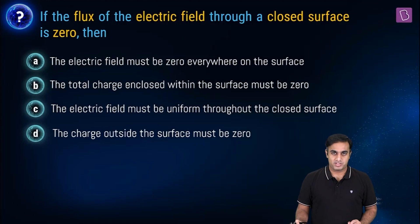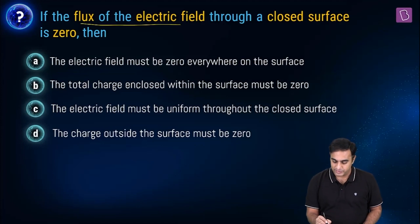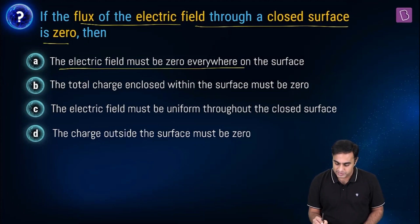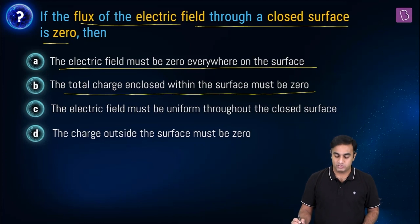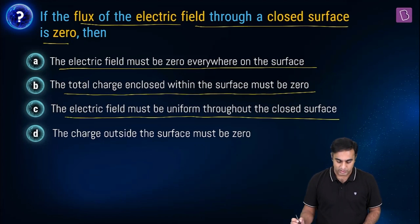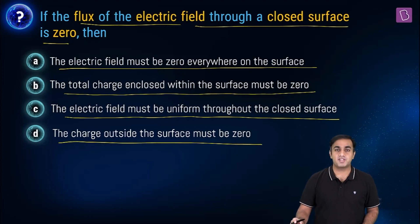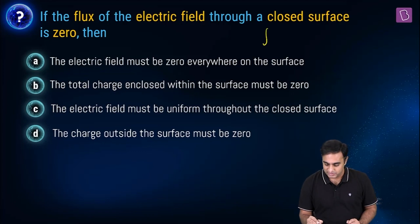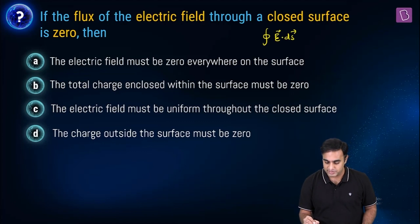The next question is about choosing the right option such that the flux of the electric field through a closed surface is zero. The options are: the electric field must be zero everywhere on the surface; the total charge enclosed within the surface must be zero; the electric field must be uniform throughout the closed surface; the charge outside the surface must be zero. To answer this, we apply Gauss's law: the integral over a closed surface of E dot dS must be equal to Q enclosed divided by epsilon naught.